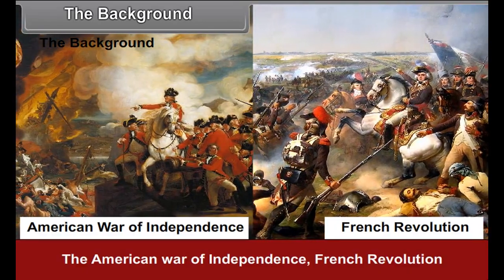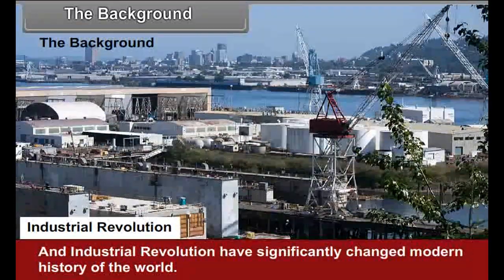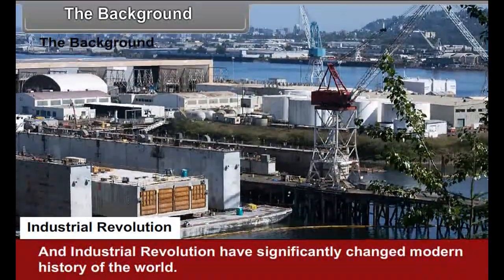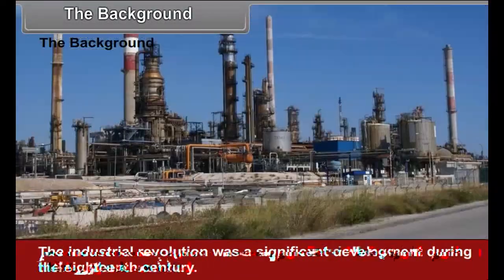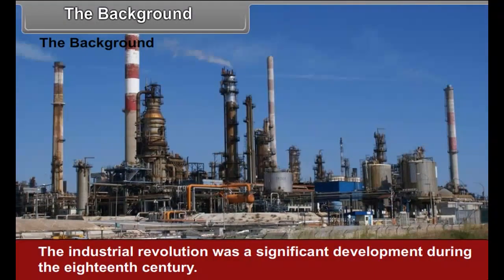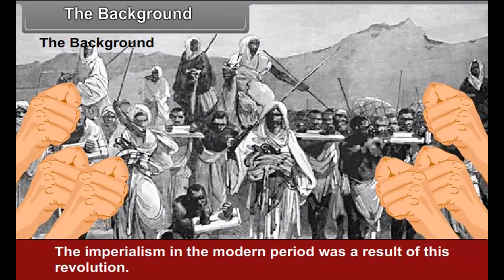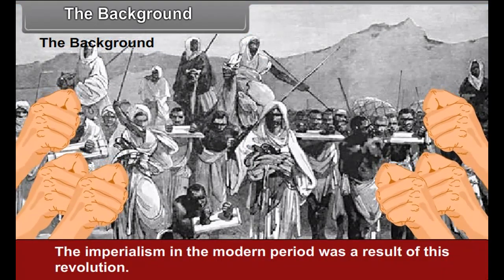Chapter 1: The Imperialism. Geographical Discoveries and Imperialism — The Background. The American War of Independence, French Revolution, and Industrial Revolution have significantly changed modern history of the world. The Industrial Revolution was a significant development during the 18th century, and the world came under its impact. The imperialism in the modern period was a result of this revolution.